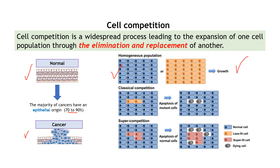What generally happens when two populations are combined is that one ends up being removed. This was first discovered by creating patches of cells with a mutation — for example the wild type in blue and the mutant in orange. What researchers found was that the mutant cells disappeared. Everyone was surprised: the cells were there, but later all of them were gone.